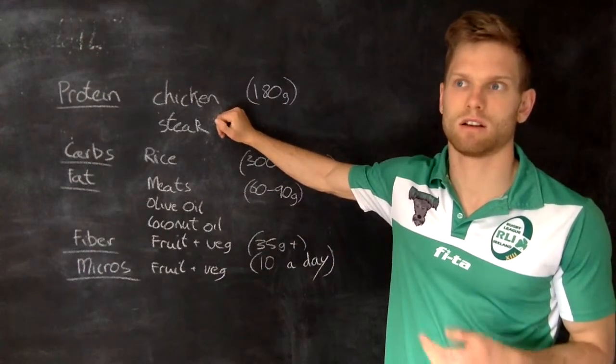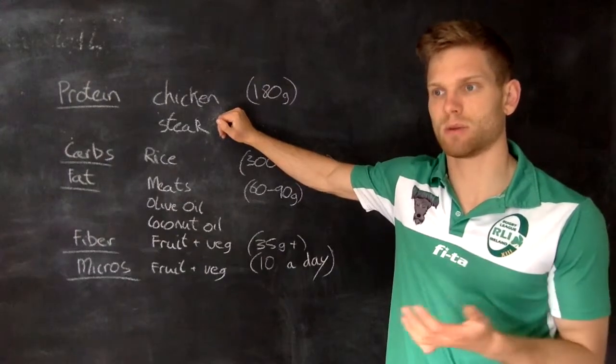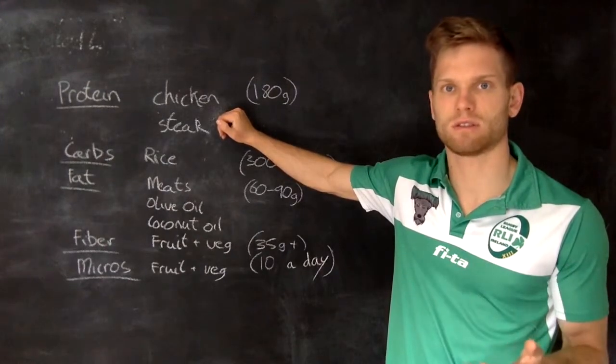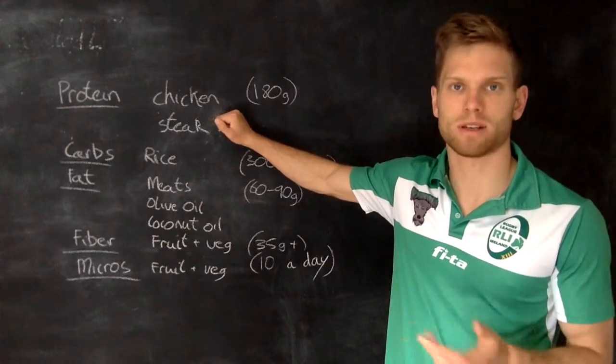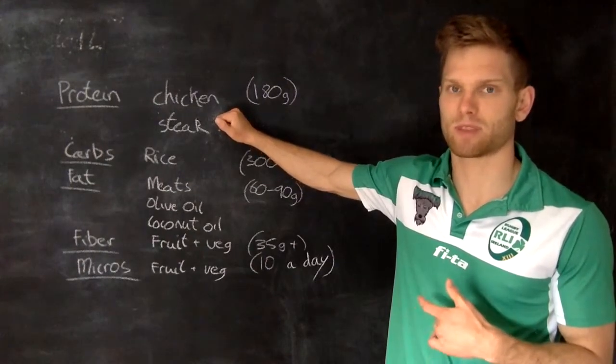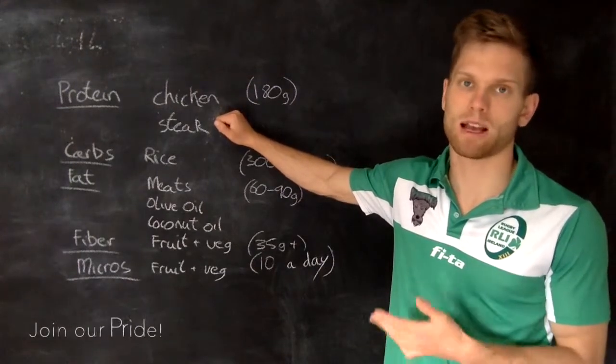Usually I'll put in maybe five to ten chicken breasts into the oven. I'll just put a bit of olive oil over, a bit of seasoning, and throw them in the oven. 20 minutes, 25 minutes, they're done and I'll chop them up and pack them away.